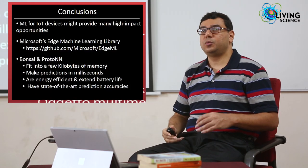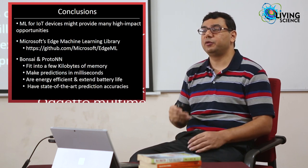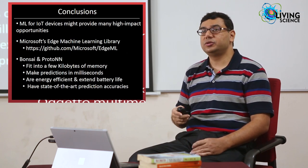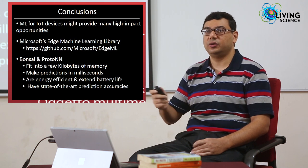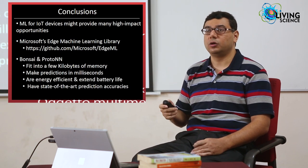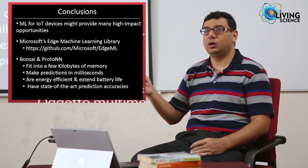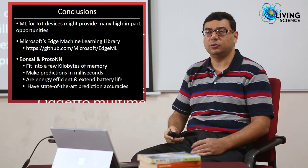To conclude, machine learning for the Internet of Things can provide many high-impact opportunities for transforming our society. Based on this, we are building the Edge Machine Learning library, now available for download from GitHub under an MIT license. The library includes two algorithms — Bonsai and ProtoNN — which are fast, accurate, compact, and energy efficient. We are also working on a recurrent neural network algorithm that should eventually be added to the Edge ML library. Thank you very much for listening.